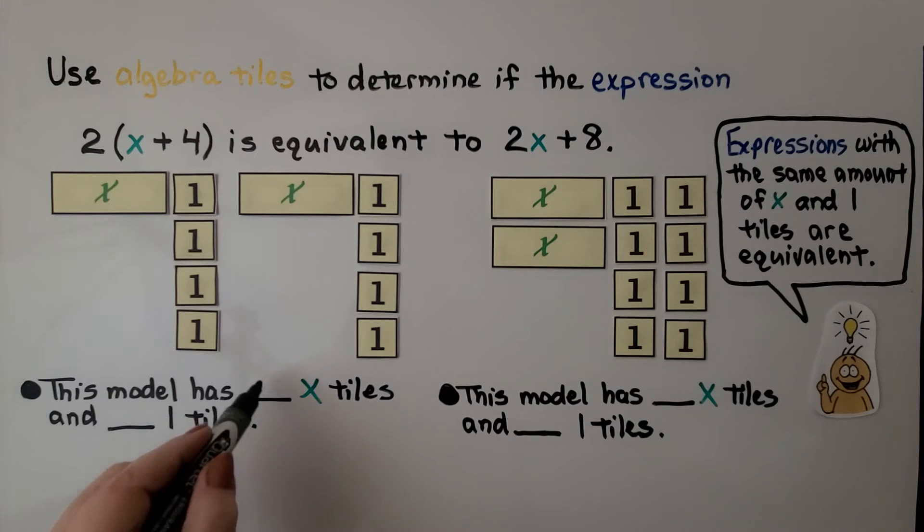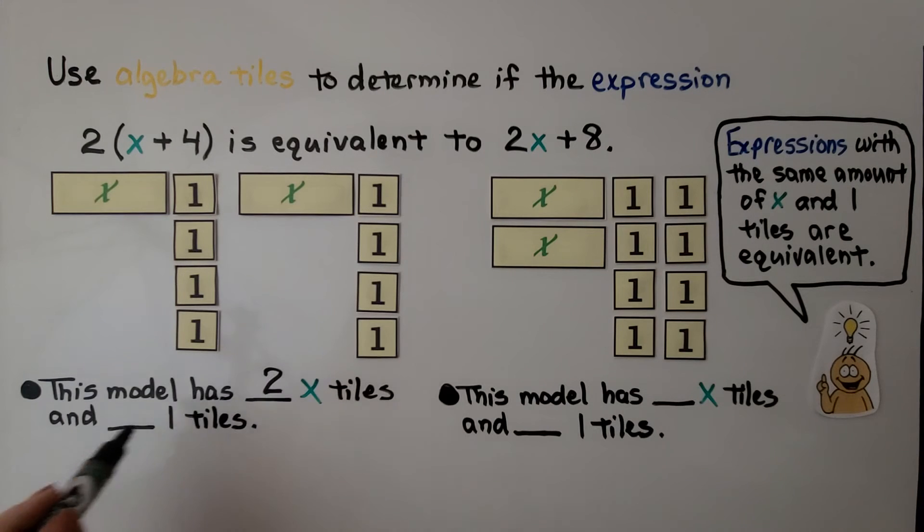This model has two x tiles and eight one tiles. And this model has two x tiles and eight one tiles. The expressions with the same amount of x and one tiles are equivalent.